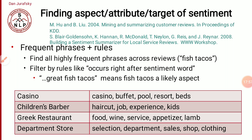For example, aspects of a casino would be: buffet, pool, resort, beds. For a children's barber, aspects include: haircut, job, experience, kids. For a Greek restaurant: food, wine, service, appetizer, lamb. For a department store: selection, department, sales, shop, cloth. These are examples of domain-specific aspects identified using this method.